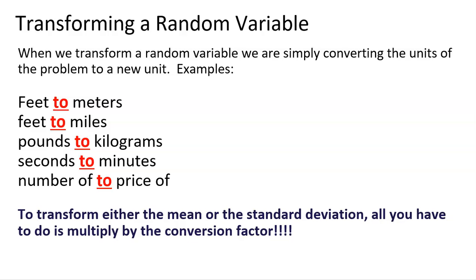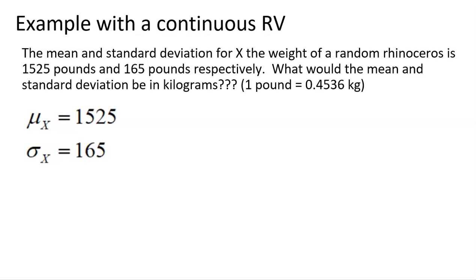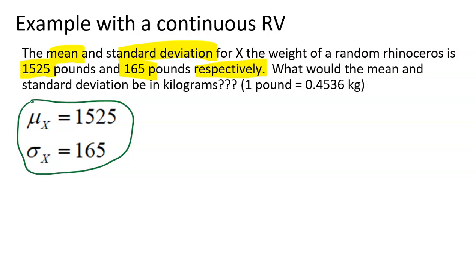To transform either the mean or the standard deviation, all you have to do is multiply by the conversion factor. We're literally taking a mean in a certain unit and transforming it to a new unit. Let's do an example with a continuous random variable. The mean and standard deviation for X, the weight of a random rhinoceros, are 1,525 pounds and 165 pounds, respectively. These values are in pounds.